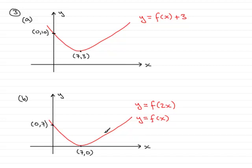What that means is that this graph gets squeezed towards the y-axis. This minimum point here, instead of being at (7, 0), now moves to a new point, which is half that distance to the y-axis. So it's a new point, which will be (3.5, 0). That will be the coordinates then of the new minimum point.